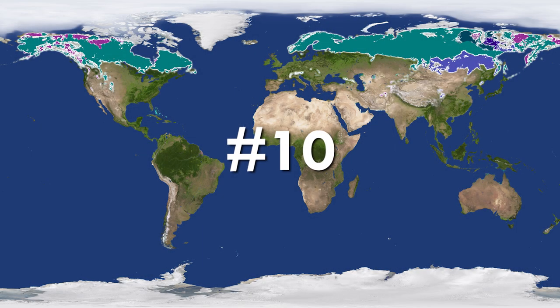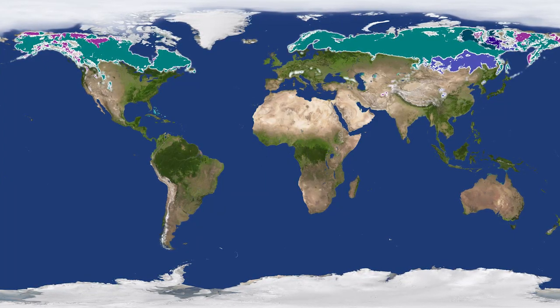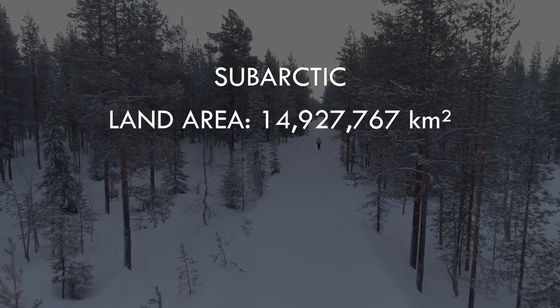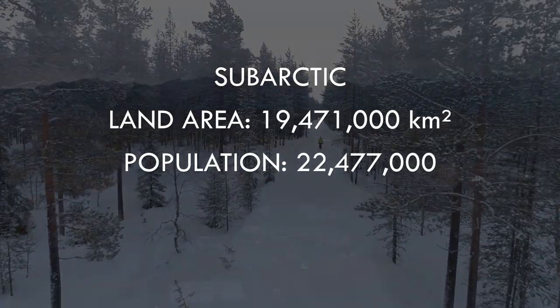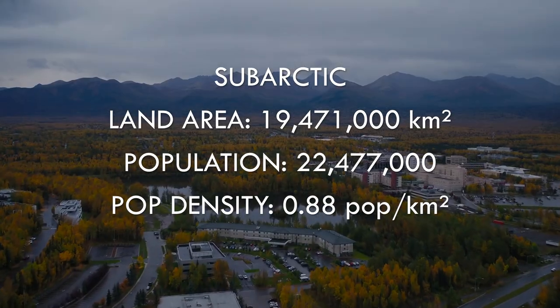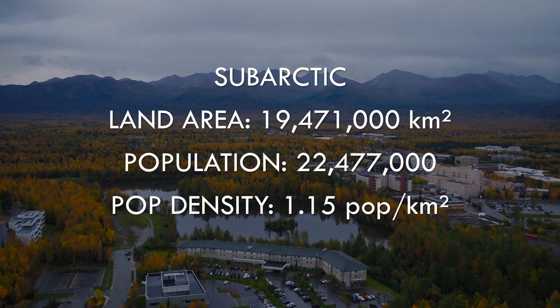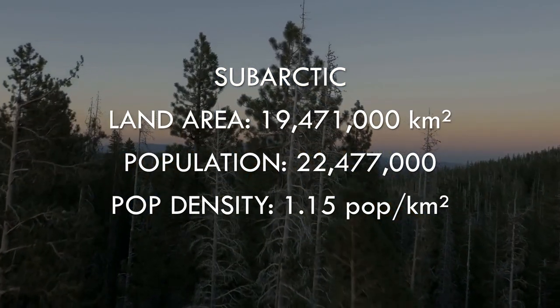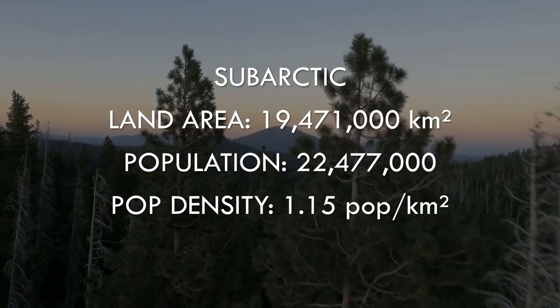At number 10, and once again we progress to the next warmer zone, that of the subarctic. Spread over a vast area of North America and Eurasia, its population is in the millions, so the density is orders of magnitude higher than the tundra. Although this figure is deceptive, as the vast majority of these millions live within the few cities in this zone, leaving most of the endless wilderness of the boreal forests just that – empty.